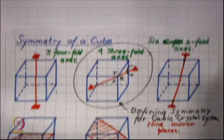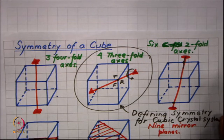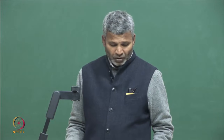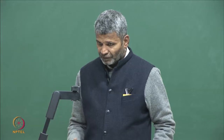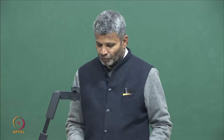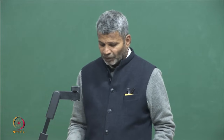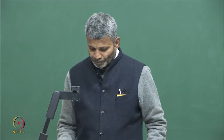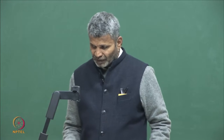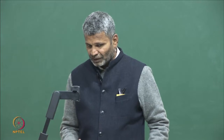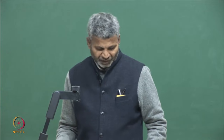We will continue our discussion on the classification of lattices. We have shown in this video that it is the symmetry, and not the unit cell shape, that defines different crystal systems. We have mainly focused on the crystal system classification, which is based on point group symmetry. In the next video, we will take up the classification of Bravais lattices and address some earlier questions — for example, why cubic C was absent but face-centered cubic was present.